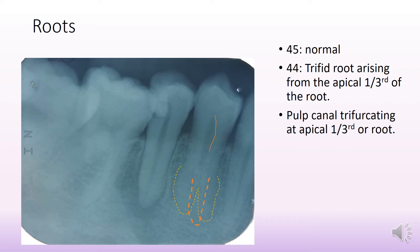You will also see the outline of the pulp chamber entering the canal, also being trifid. You can see the trifurcation very clearly in the apical one-third of the root especially.